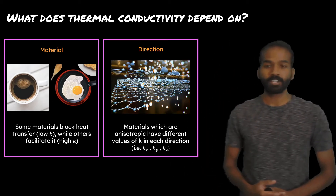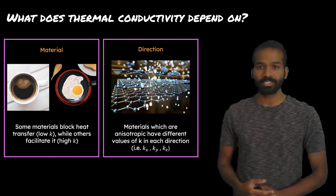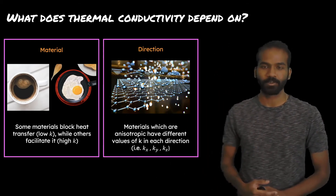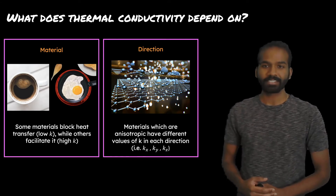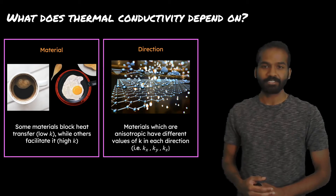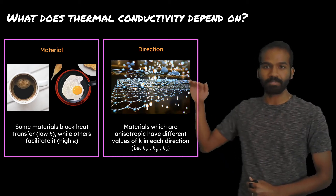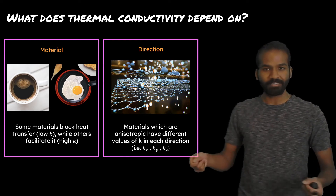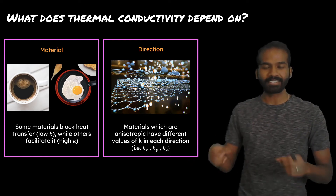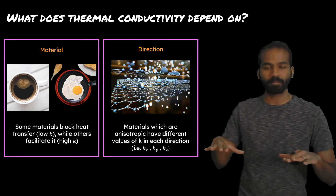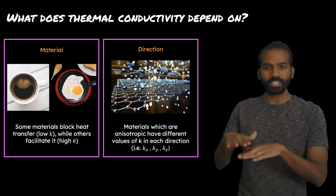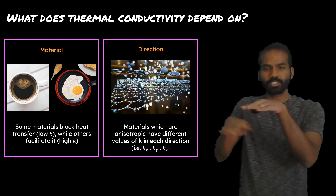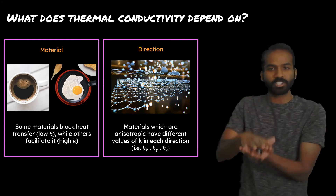Thermal conductivity can also depend on direction in a material. Here we're looking at the example of graphite. Graphite consists of sheets of graphene, which are stacked on top of each other, as you can see in this image. Each sheet of graphene has carbon atoms which are covalently bonded to each other, and those sheets are stacked on top of each other, just like sheets of paper.